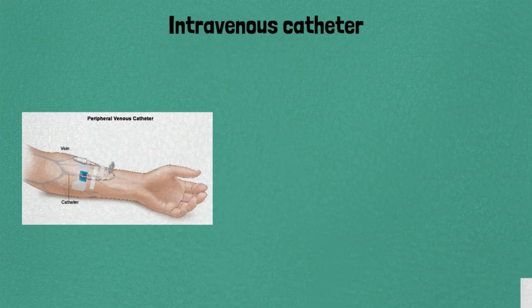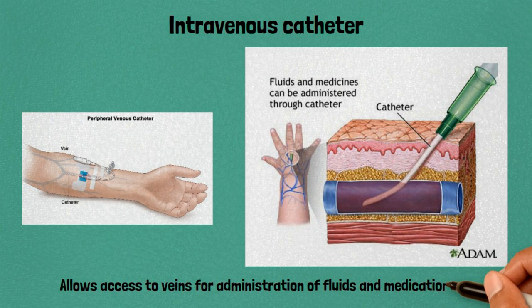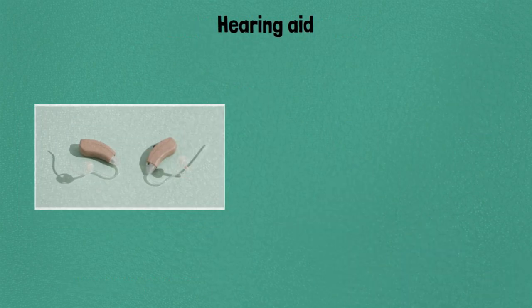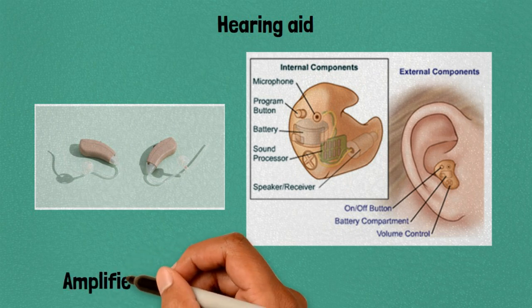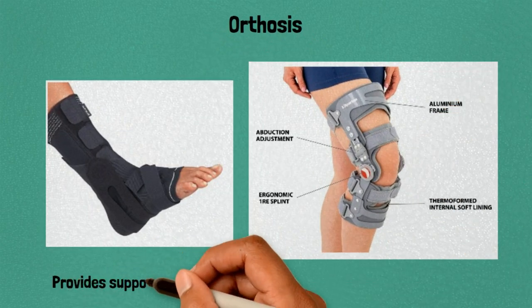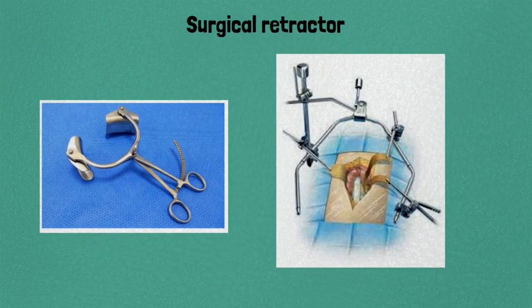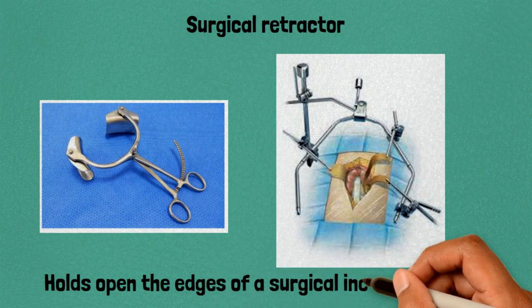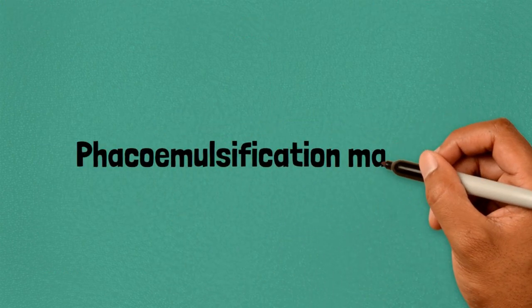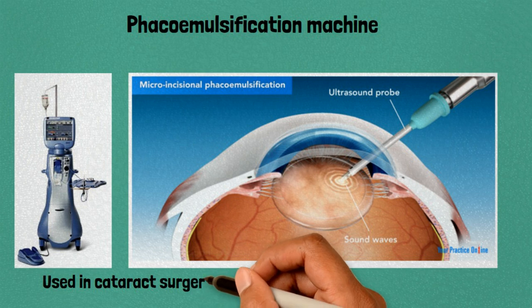Forty-five: intravenous catheter, allows access to veins for administration of fluids and medications. Forty-six: hearing aid, amplifies sound for individuals with hearing loss. Forty-seven: orthosis, provides support or correction to a body part such as a brace or splint. Forty-eight: surgical retractor, holds open the edges of a surgical incision or wound.